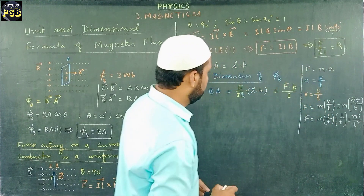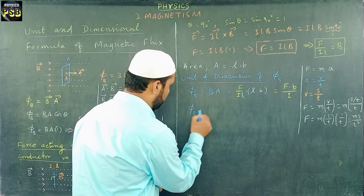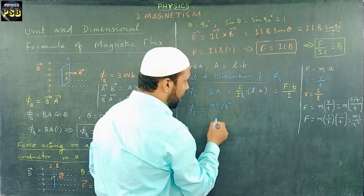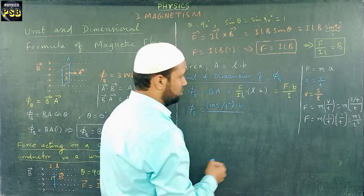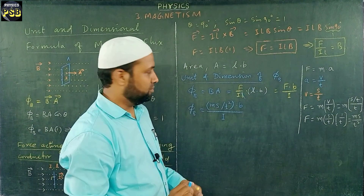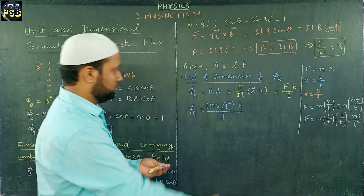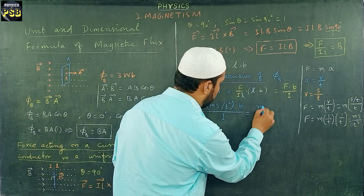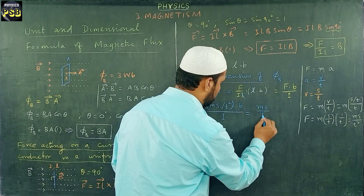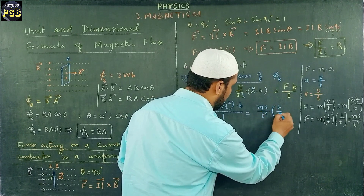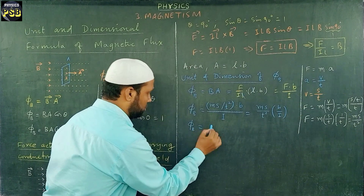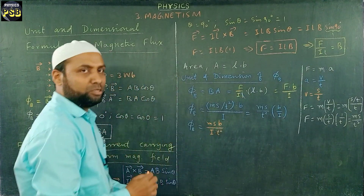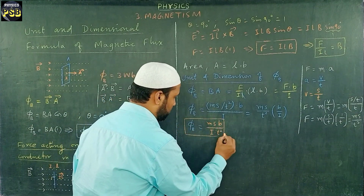So I am going to use F = ms/t² here. Substituting into Φ_B = FB/I, we get Φ_B = (ms/t²) × B / I, which gives us m·s·B / (I·t²) as the new expression for Φ_B.